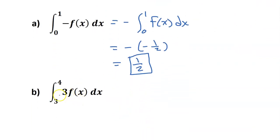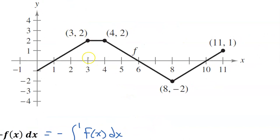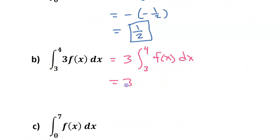Next we want the integral from 3 to 4 of 3 times f of x. I'll always put the constant in the front, so this will be 3 times the integral from 3 to 4 of f of x. From 3 to 4 is just this rectangle above the x-axis, which is a positive area. Base times height: 1 times 2 gives an area of positive 2. With the 3 in the front, this is 3 times 2, which is 6.